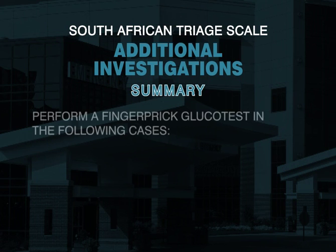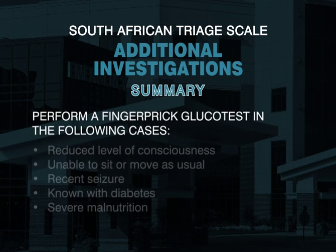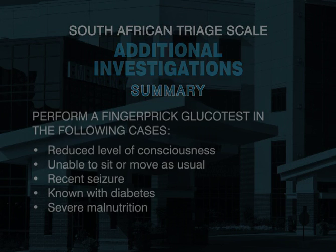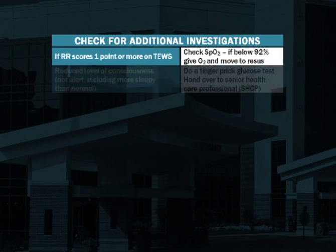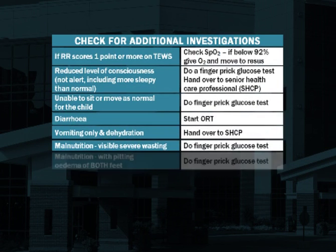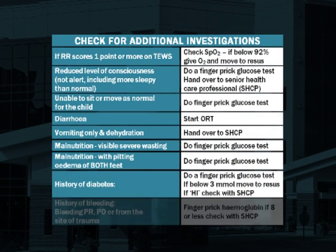In summary, we would perform a finger prick glucose test in the following cases: a patient with a reduced level of consciousness; a patient that is unable to sit or move as usual; a patient that has had a recent seizure; a known diabetic; and a patient with severe malnutrition. These additional investigations may rapidly identify very ill patients and change their triage priority level. They also prevent and/or identify serious complications.